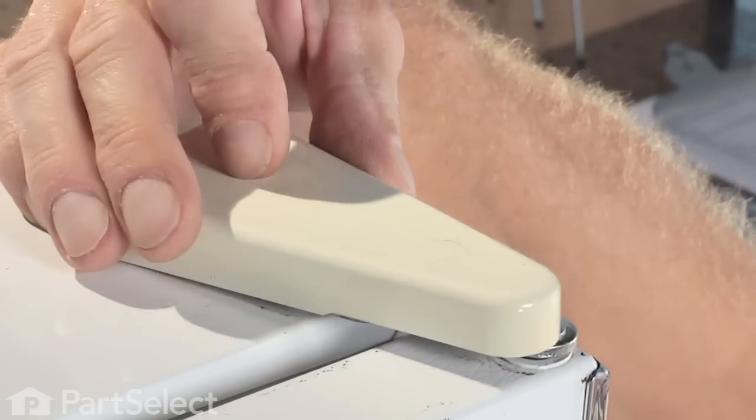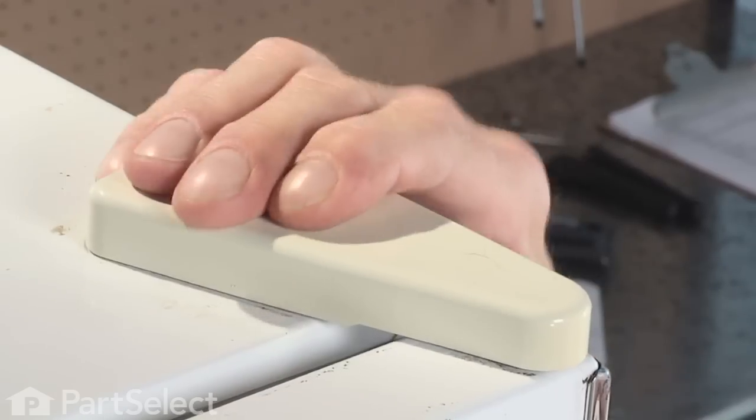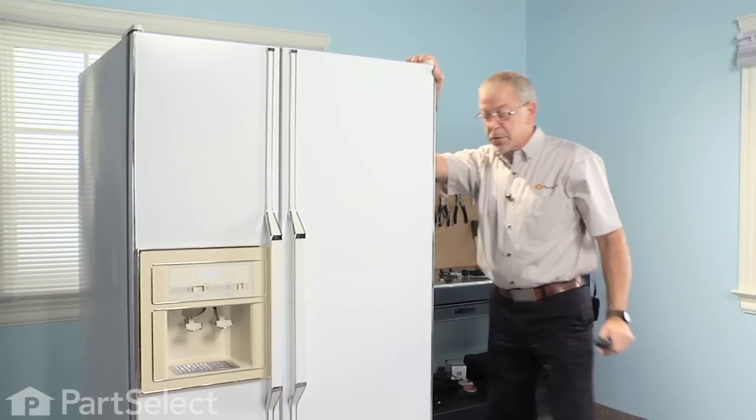Now we're ready to replace the hinge cover. It just snaps into place, and the fresh food door is done.